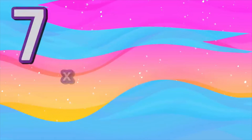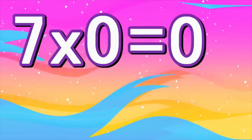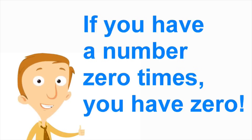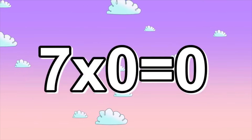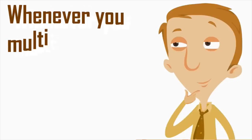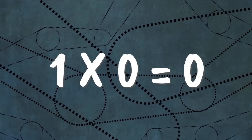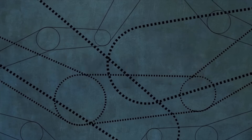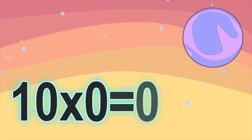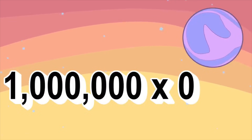Let's try this one: seven times zero. What do you think seven times zero is? Zero. If you have a number zero times, you have zero. Seven times zero equals zero. Seven times zero means the number seven zero times — the answer is zero. Whenever you multiply a number times zero, the answer is zero. One times zero equals zero; five times zero equals zero; ten times zero equals zero. What is one million times zero? Zero.